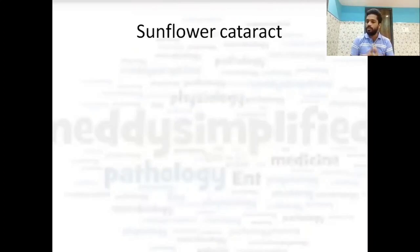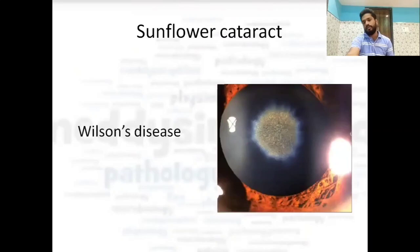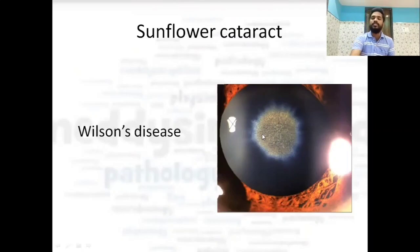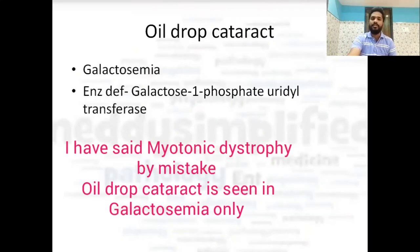Talking about systemic diseases and their related cataracts: sunflower cataract is seen in Wilson's disease. It typically looks like a sunflower — you can see beads and petals coming outside in the center. Next is oil drop cataract.